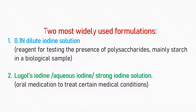In this video, we'll mainly focus on two different preparation protocols for iodine solution. The first type is a dilute approximately 0.1 normal iodine solution, commonly used as a reagent for testing the presence of polysaccharides, mainly starch, in a biological sample.